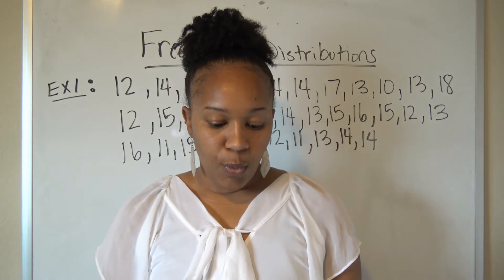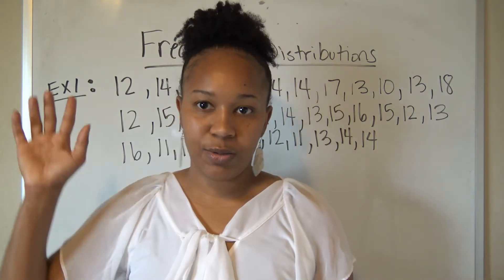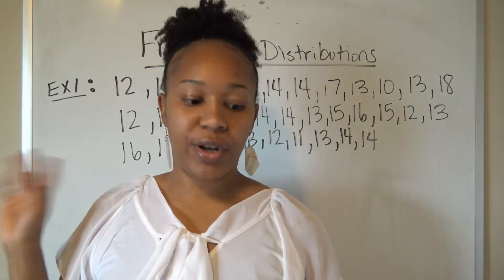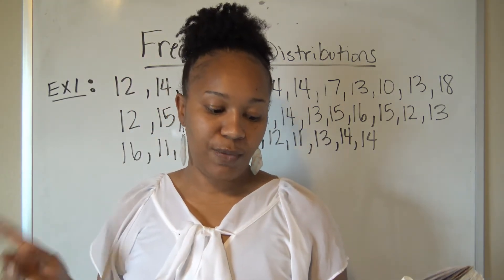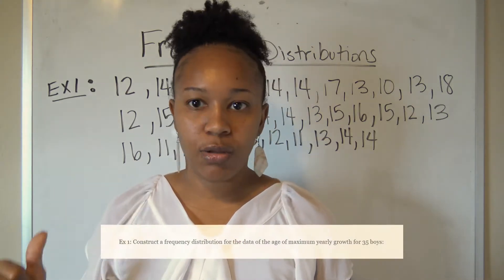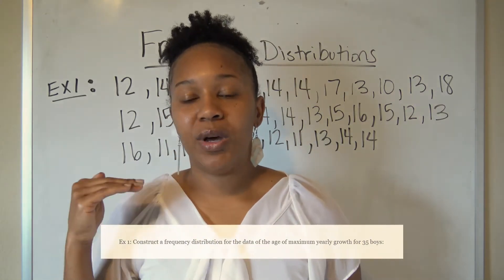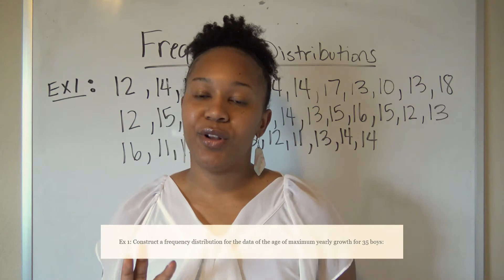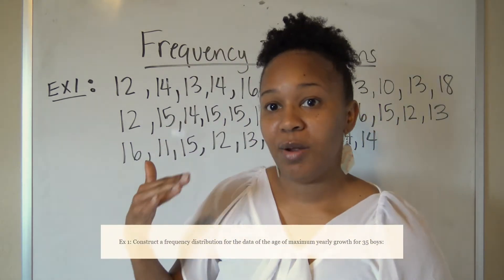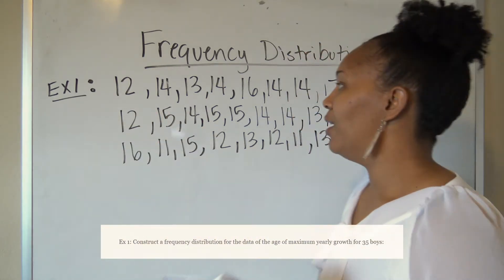We're going to jump right in and look at an example. You can see all these numbers behind me — we're going to create a frequency distribution for this data. The data is the age of maximum yearly growth for 35 boys — the age where a young boy stopped growing, collected for 35 people. These are the ages where they hit their growth spurt.